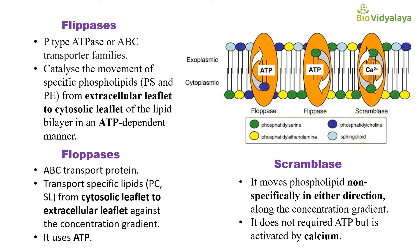Next are floppases. Floppases come under the ABC transporter protein family and transport specific lipids such as phosphatidylcholine and sphingolipids from the cytosolic leaflet to the extracellular leaflet — that means from the inner leaflet to the outer leaflet — against the concentration gradient. Because they work against the concentration gradient, they also require ATP.